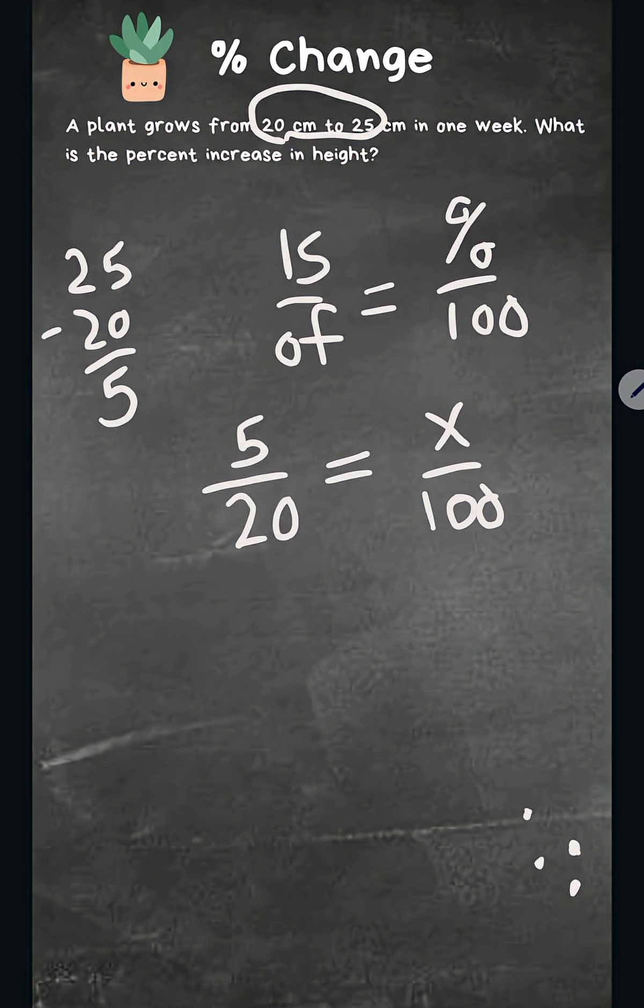So now, basically it's asking 5 is what percent of 20. Okay, 25 was the end product. So now what we do is we cross multiply.